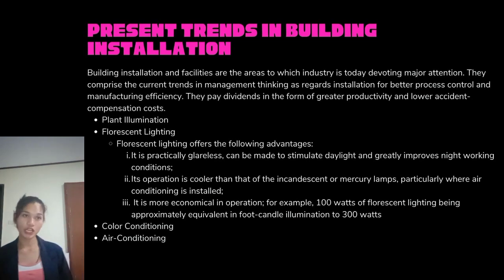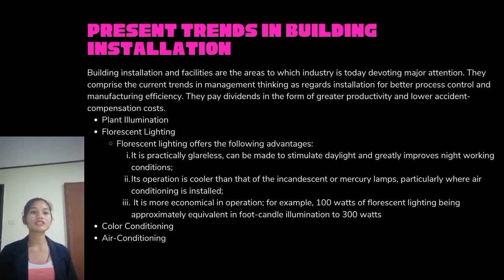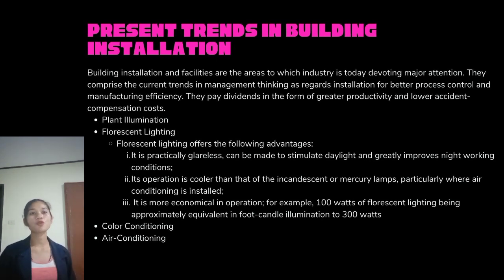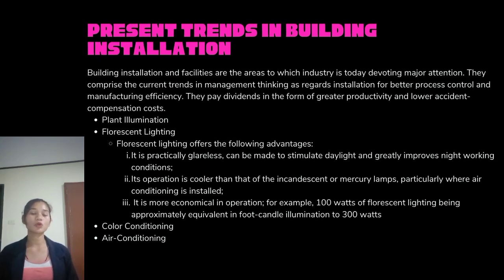Let's move on to present trends in building installations. The industry is currently focusing a lot of attention on building installations and facilities. They include the most recent developments in management theory with reference to the installation of equipment for improved process control and production effectiveness, paying off through higher production and cheaper accident compensation. The first is plant illumination — when light and paint form a partnership, they can dispel darkness, improve productivity and efficiency, and boost morale. The goal of factory lighting is to make it easy for employees to see what they are doing without effort or indecision.